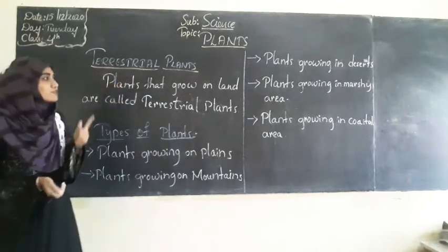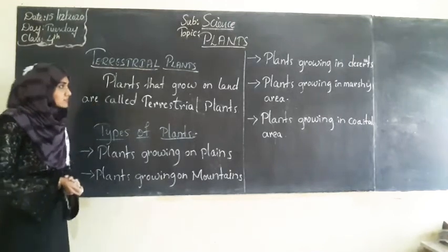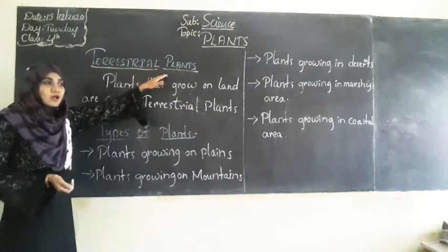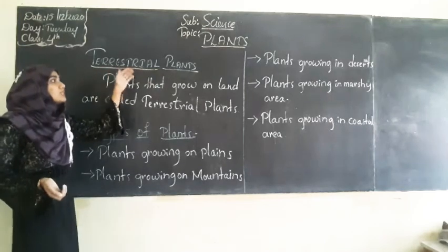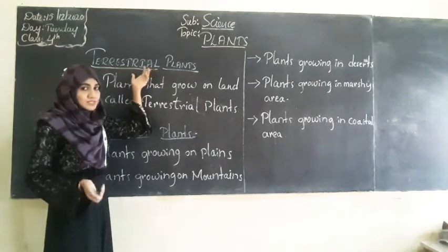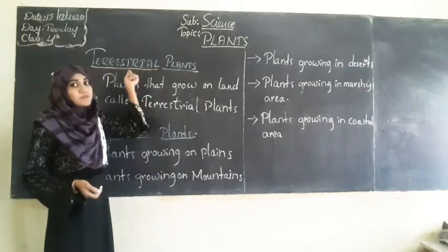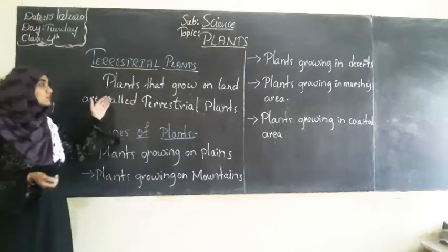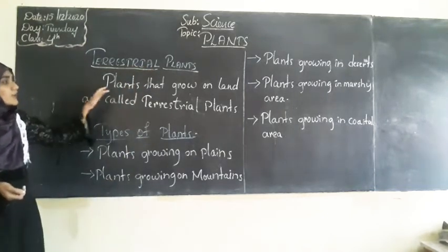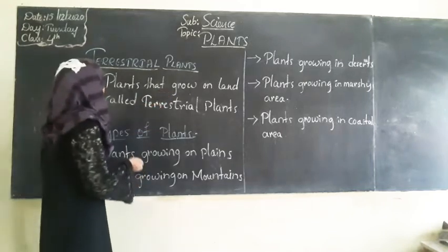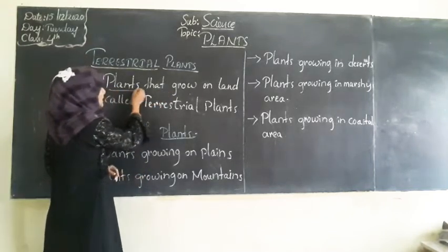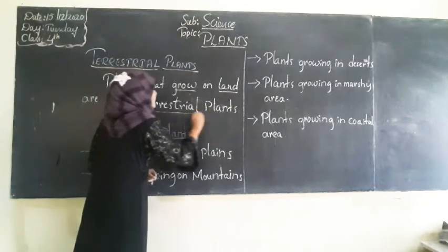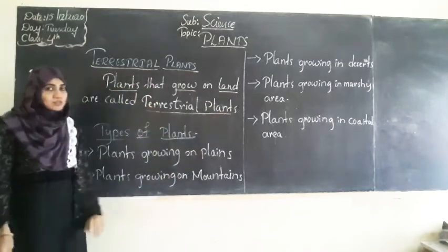So let us know the first type of plant, that is terrestrial plants. What does it mean? Plants that grow on land are called terrestrial plants.